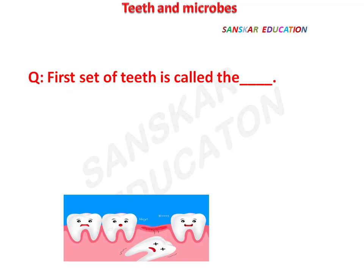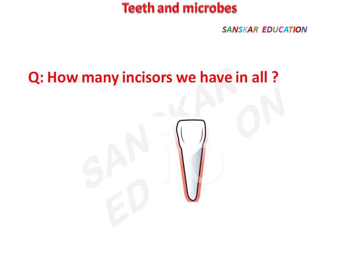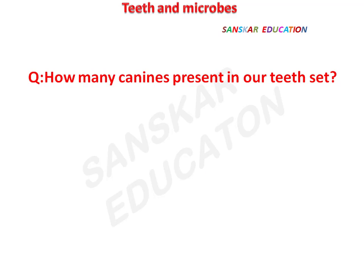The first set of teeth is called milk teeth. How many incisors do we have in all? Answer: eight incisors. How many canines are present in our teeth set? Answer: four canines.